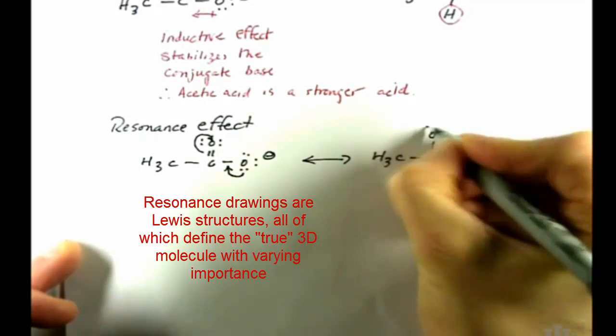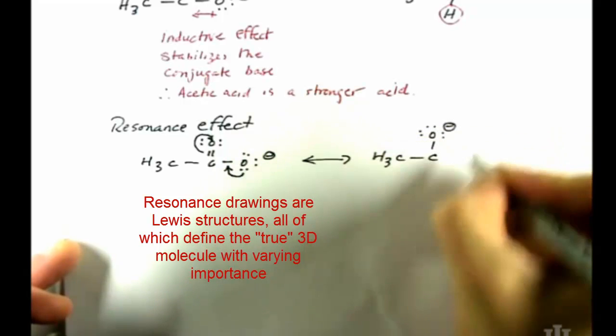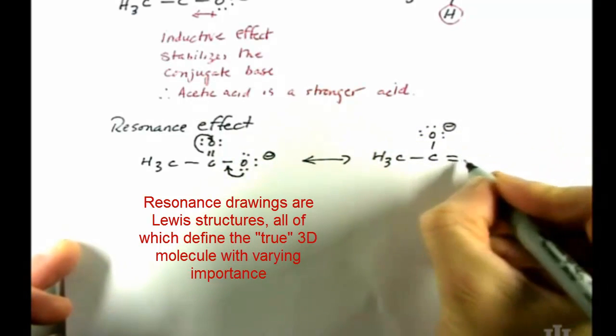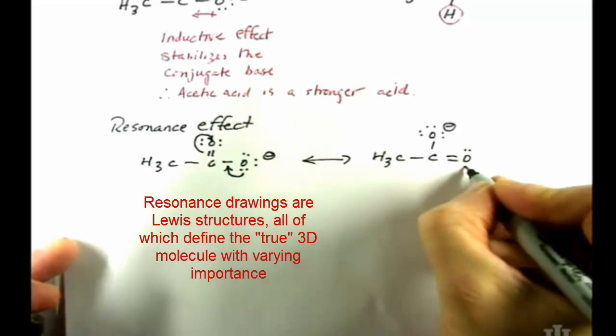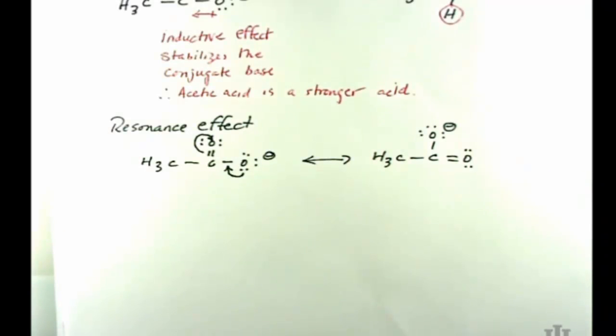The resulting resonance structure is this one. So by drawing these two resonance structures you show a way to delocalize the electrons between the two oxygens in acetic acid. If you look at these two structures, they're both essentially identical to one another except which oxygen is negatively charged and which one is neutral.